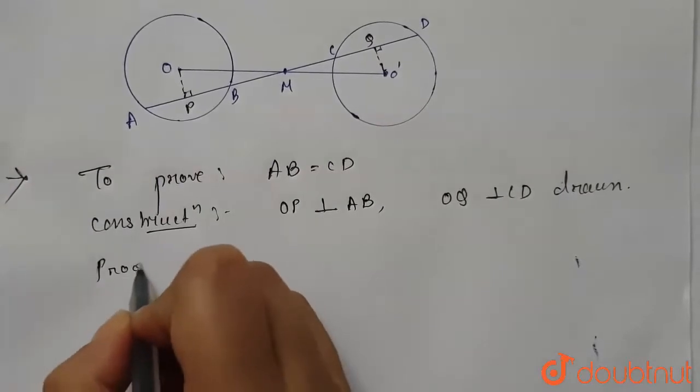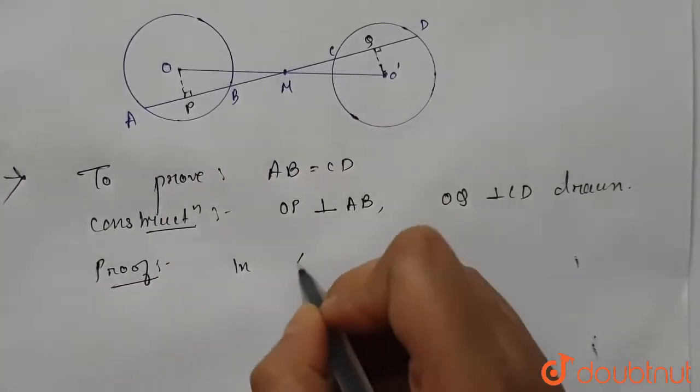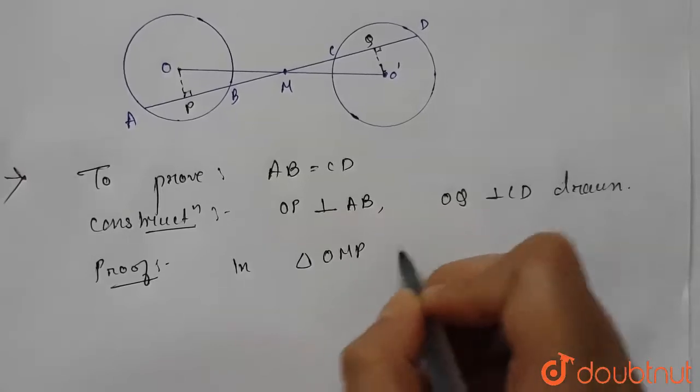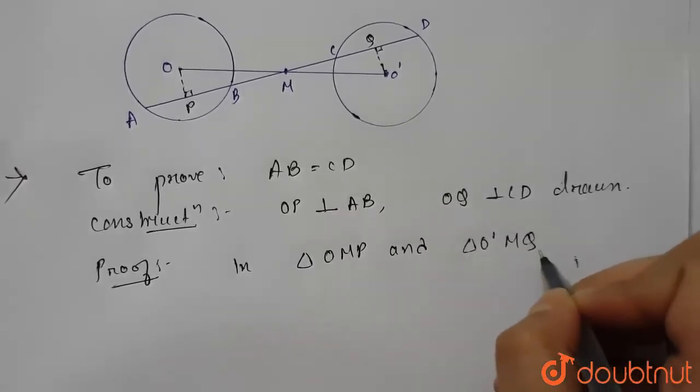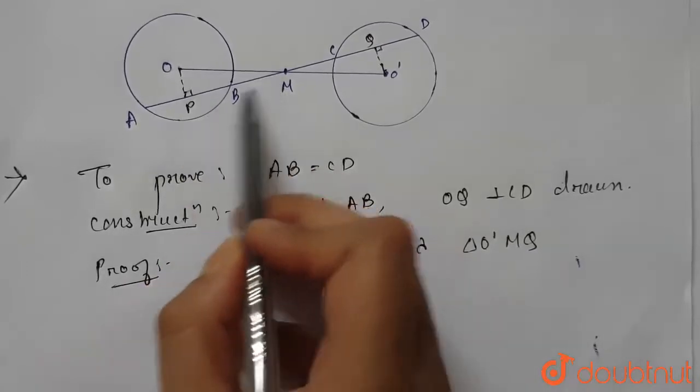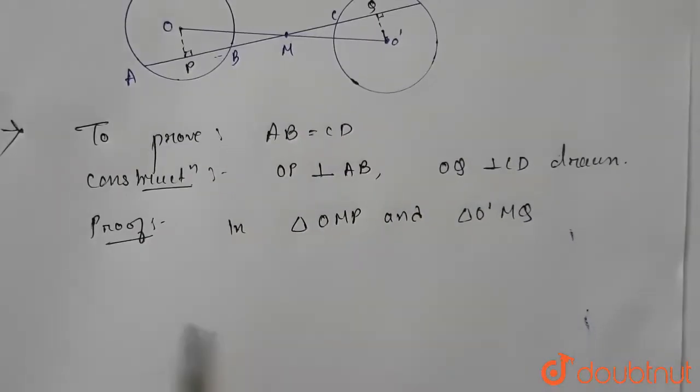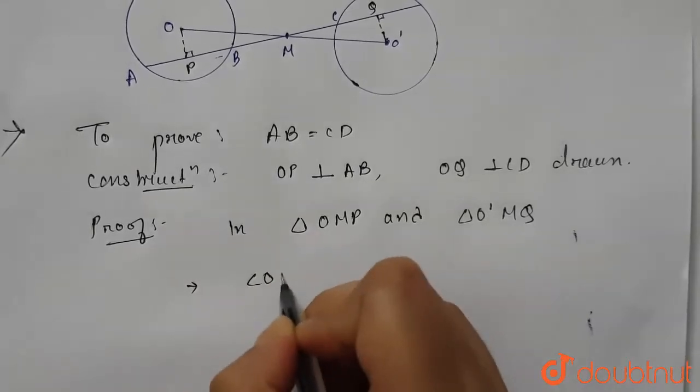Now the required proof. Let's take triangles OMP and triangle O dash MQ. So we are taking this triangle and this triangle. In these two triangles we can write...